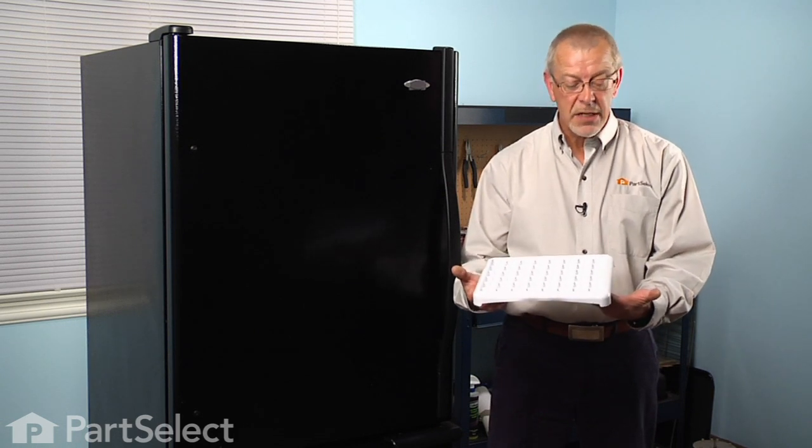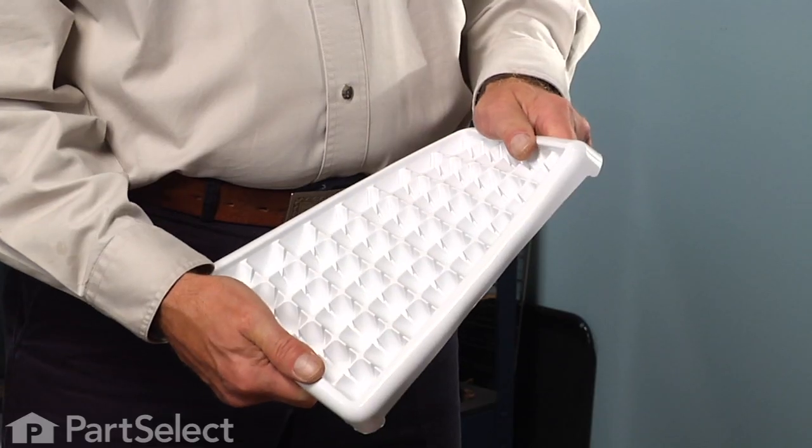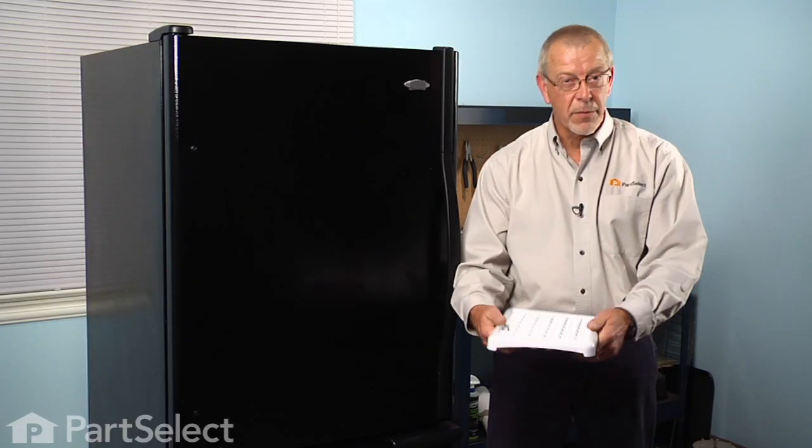With this type of tray, the easiest way to release the cubes is to give the tray a twisting motion side to side. That should free them from their mold.